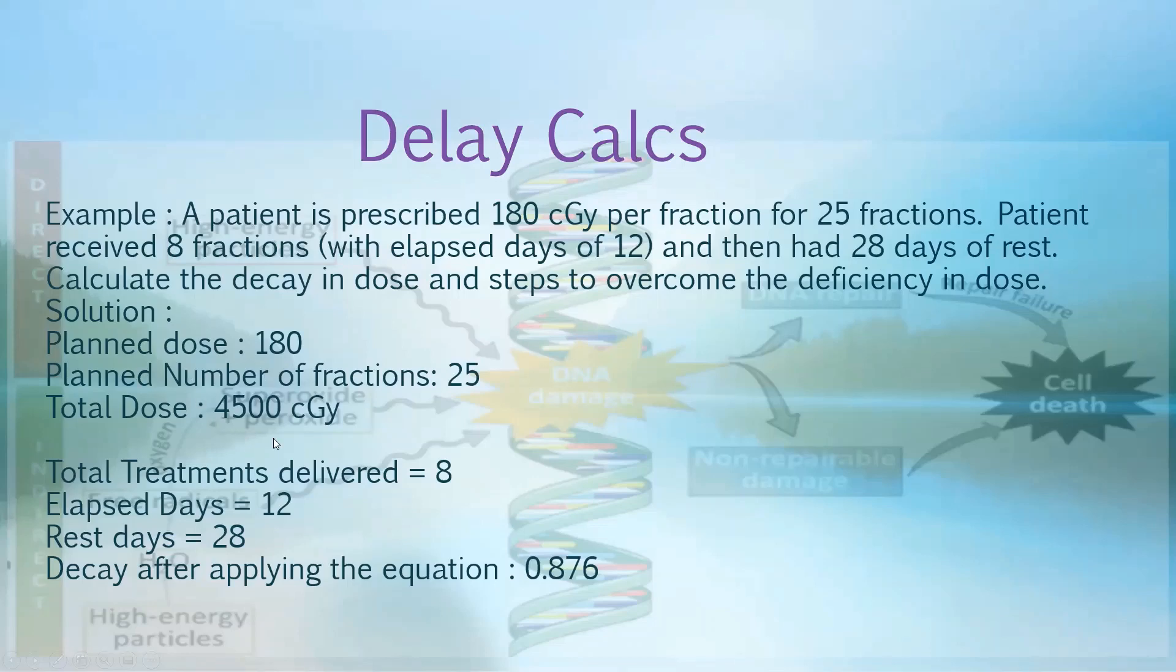The total dose to the patient, the planned dose was 4,500, 180 times 25. And after 8 treatments within elapsed days of 12 and 28 days rest, this will create a 0.876 effect. So the dose will be decayed by 13.4%.